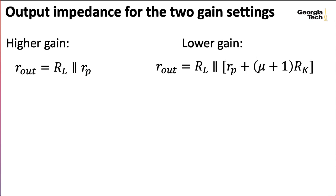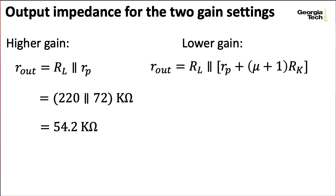Okay. So what about the output impedances? Well, for the fully bypassed case, RL in parallel with RP is 220 kiloohms in parallel with 72 kiloohms, giving us 54.2 kiloohms.